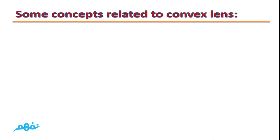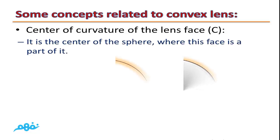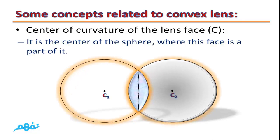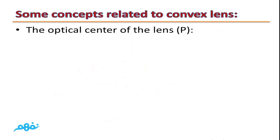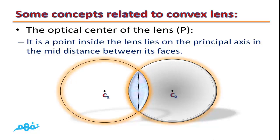Some concepts related to the convex lens. First, the center of curvature of a lens face: it is the center of the sphere of which this face is a part. As you can see, each lens has two faces, so it has two centers of curvature. Second, the optical center of the lens: it is a point inside the lens lying on the principal axis at the mid-distance between its two faces.